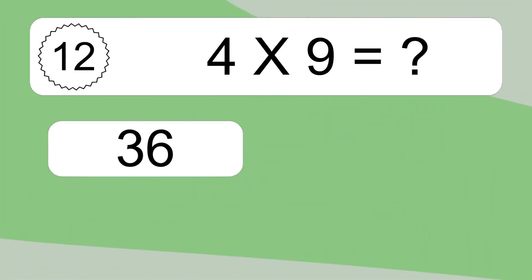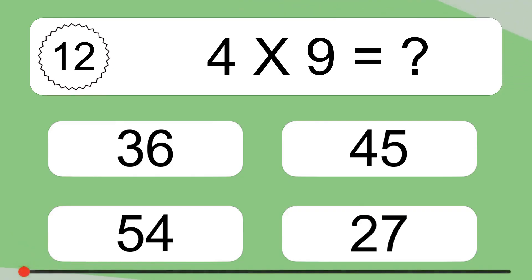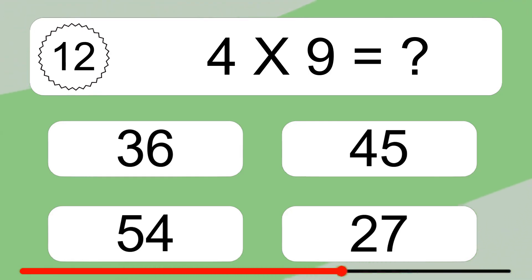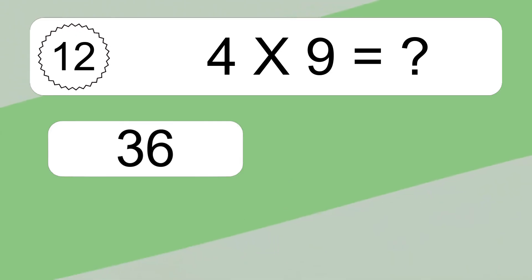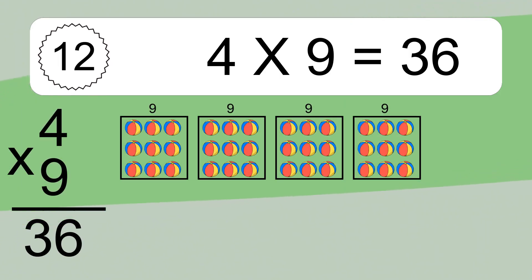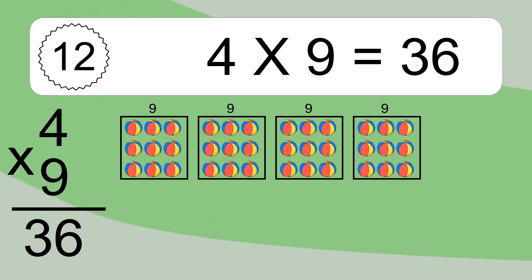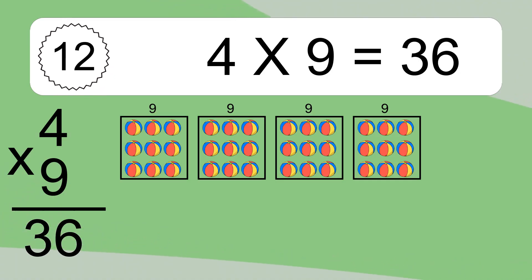4 times 9 equals what? 4 times 9 equals 36. We have 4 boxes, and each box has 9 colorful balls inside. If you count all the balls in all the boxes together, you will have 4 times 9 balls. This equals 36 balls.